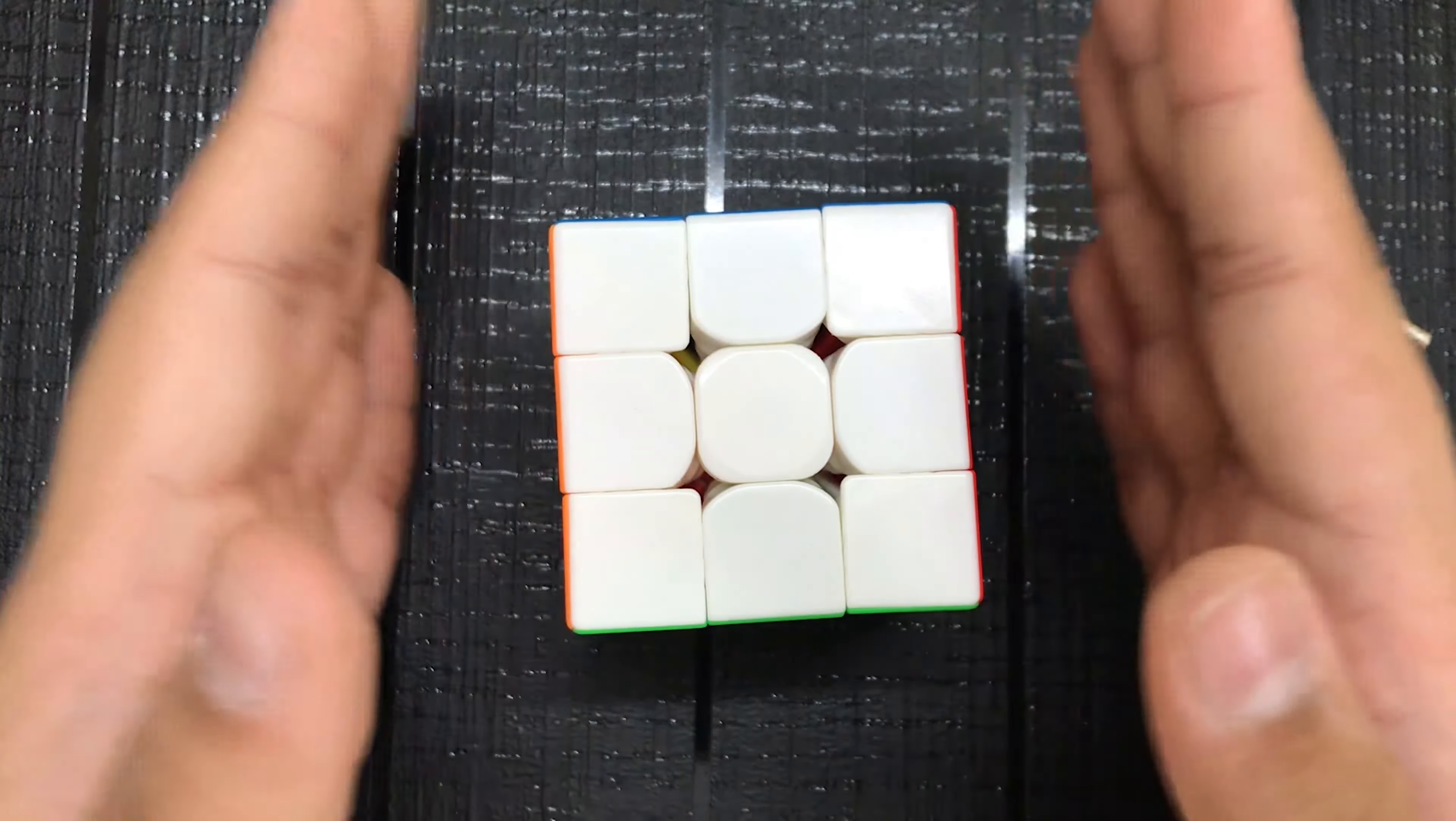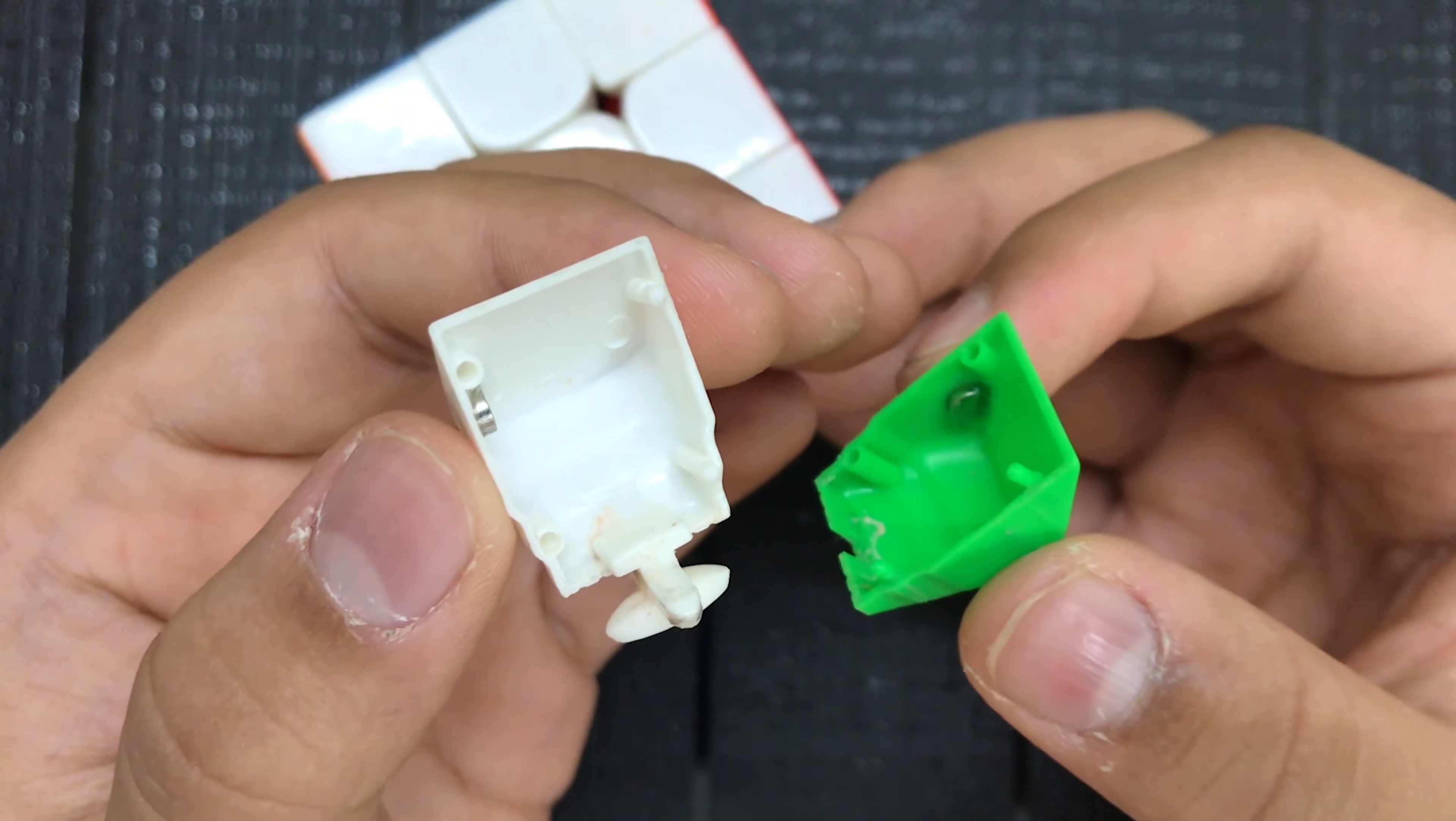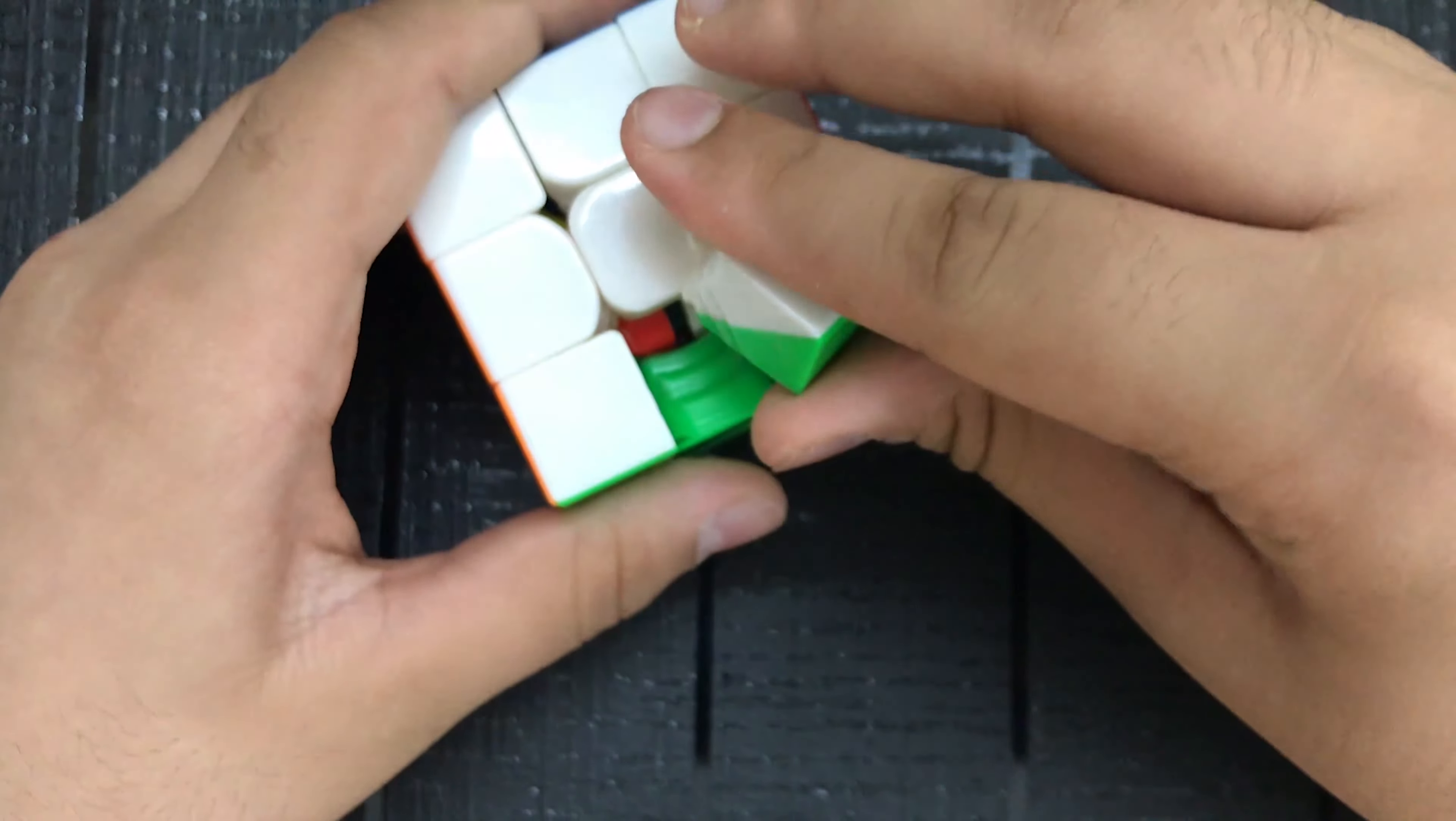So this cube is a Yushimu's magic magnetic. I'm going to be putting magnets on the edge pieces, so somewhere over here. And we're going to see how it feels like.